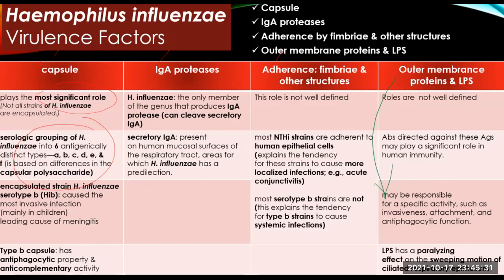In contrast to other serotypes, the serotype B capsule is a unique polymer composed of ribose, ribitol, and phosphate. Evidence suggests that the antiphagocytic property and anti-complementary activity of the type B capsule are important reasons for its significance. These properties are really important for the pathogenesis of invasive disease.